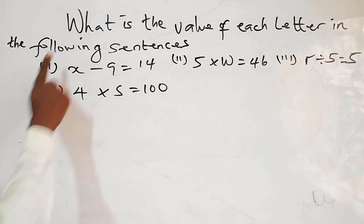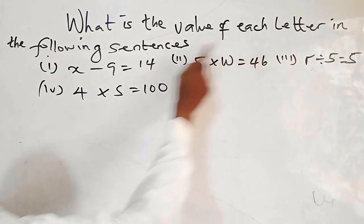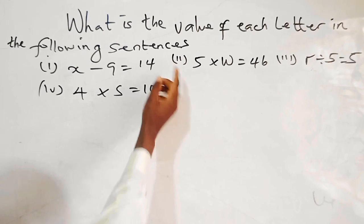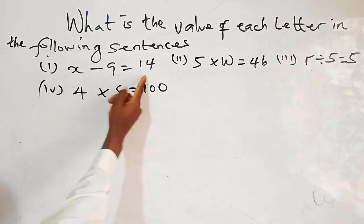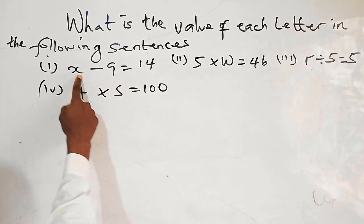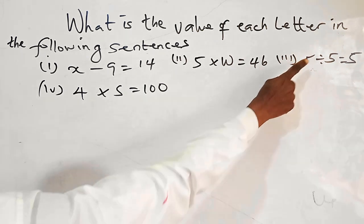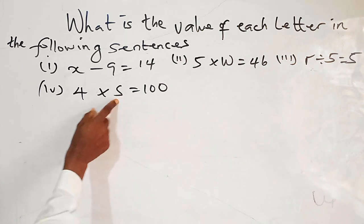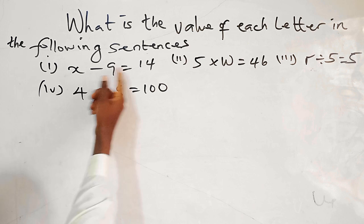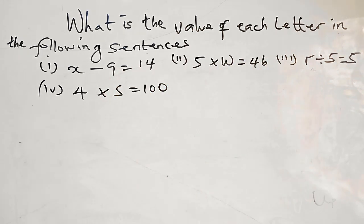The question says, what is the value of each letter in the following sentences? Like the first one, letter X, which is the unknown. Here you have W, the unknown letter, R, and we have S. So we have to figure out what each letter stands for in these sentences.